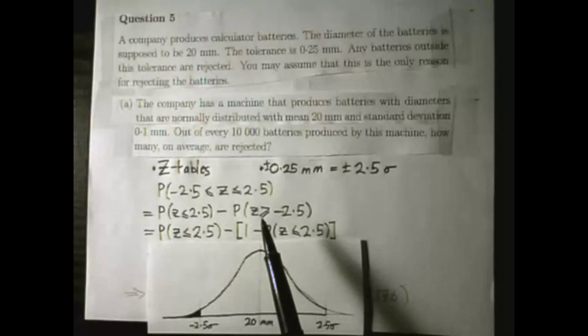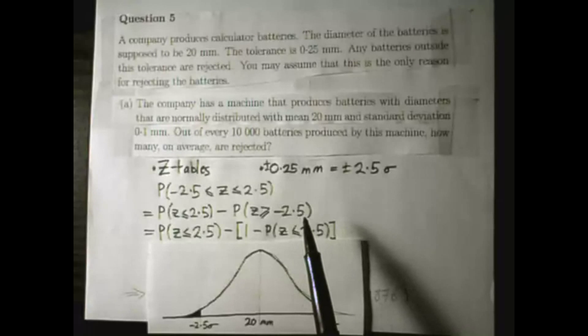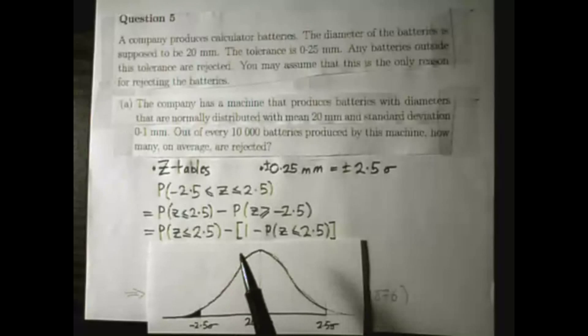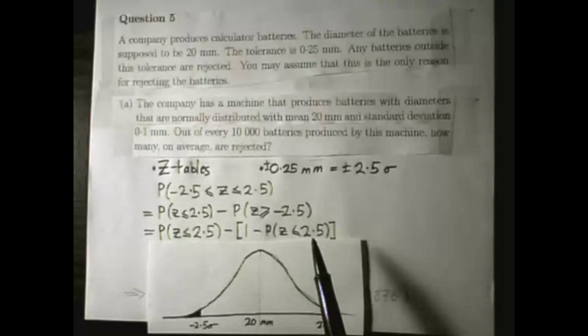I'm going to rewrite this part though, where z is greater than minus 2.5, because that's not going to appear in your z tables. I'm going to rewrite that as 1 minus everything z is less than or equal to 2.5.